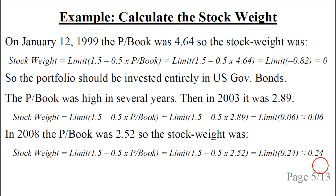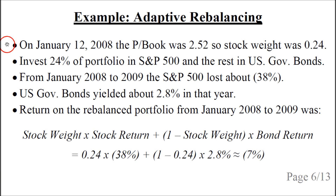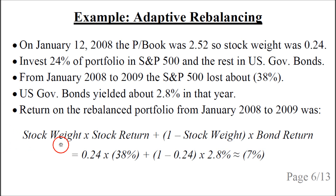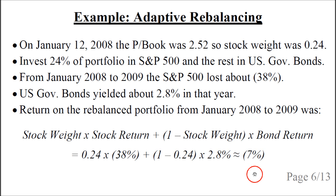So 24% of the portfolio should be invested in the S&P 500 and the remaining in US government bonds. From January 2008 to 2009, the S&P 500 lost about 38% and US government bonds yielded about 2.8%. The return on the rebalanced portfolio is calculated as: stock weight (0.24) multiplied by the stock return (minus 38%), plus one minus stock weight multiplied by the bond return (2.8%), giving a result of approximately minus 7%.